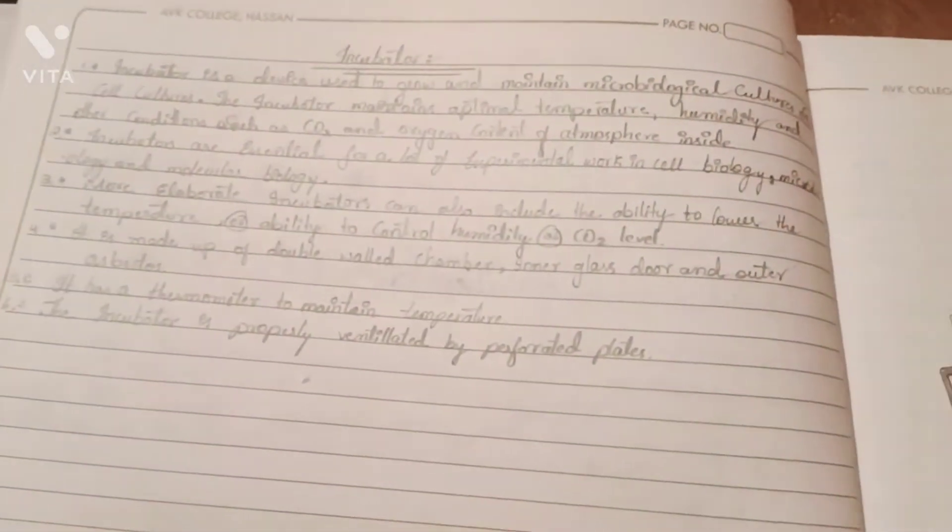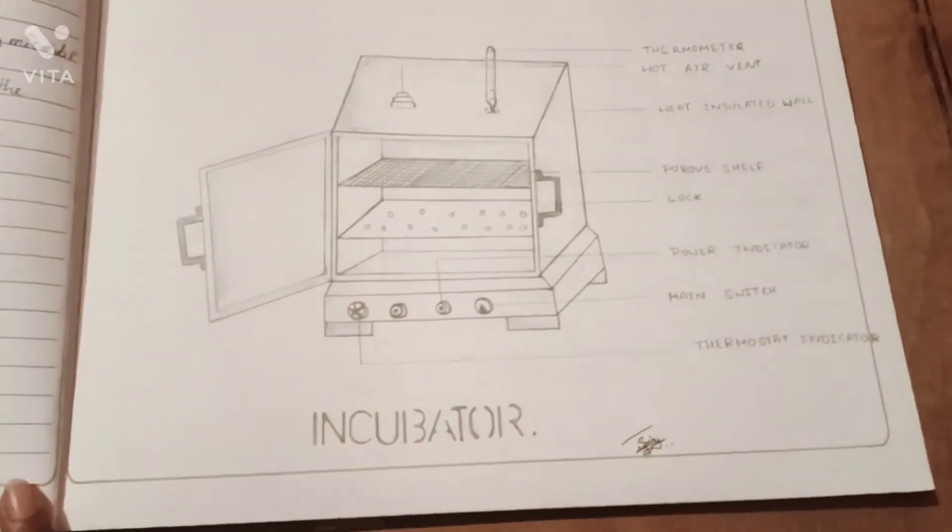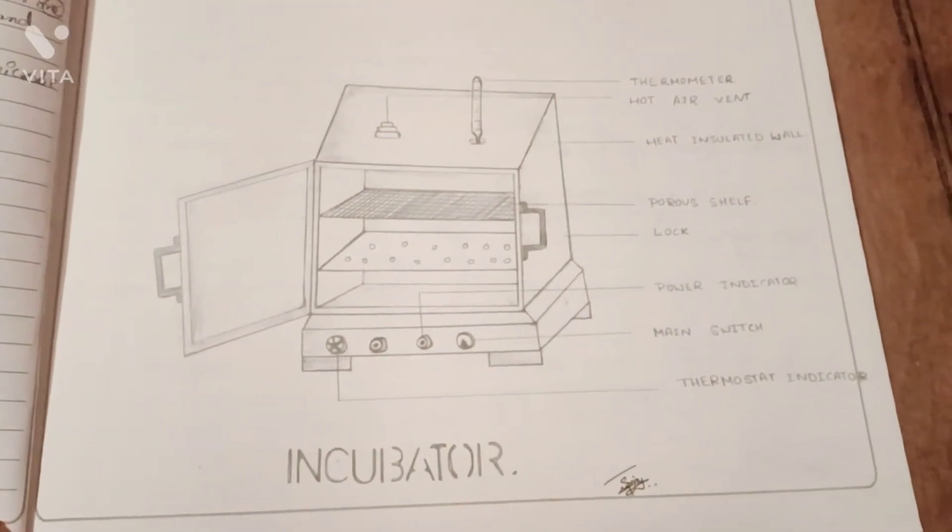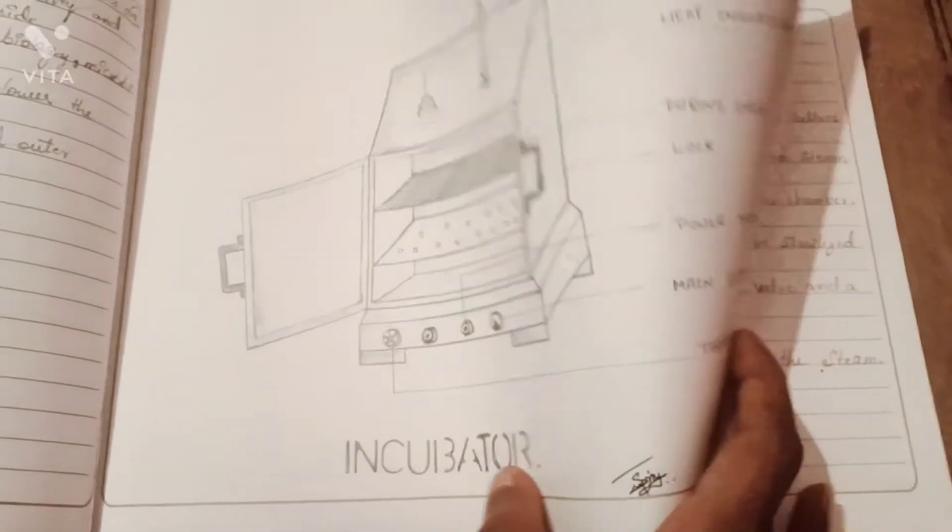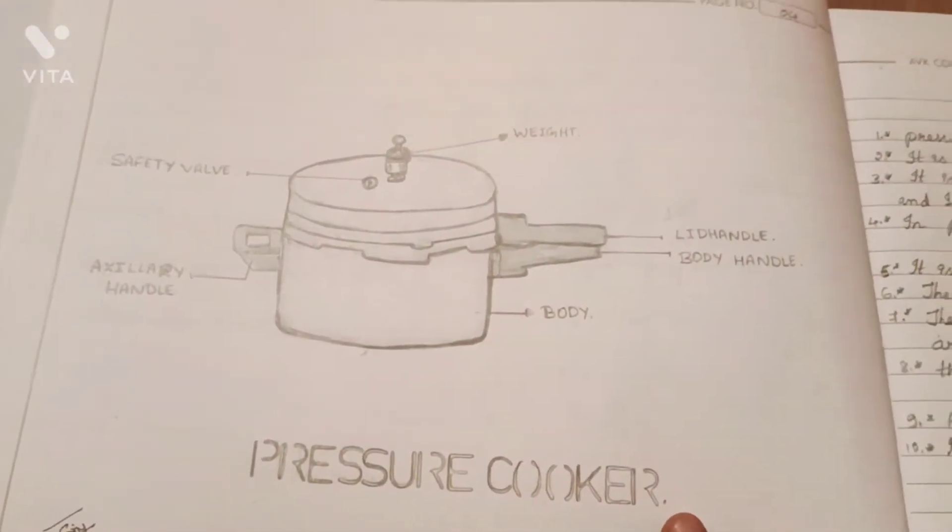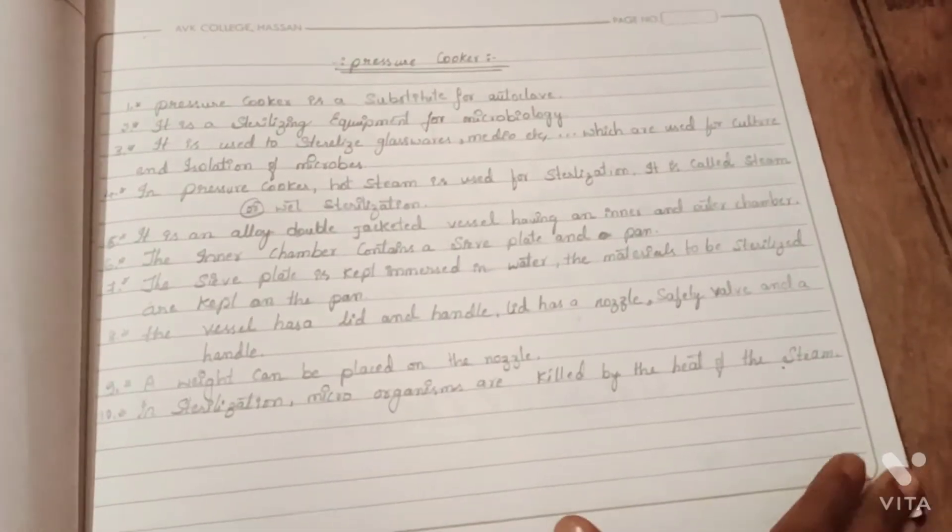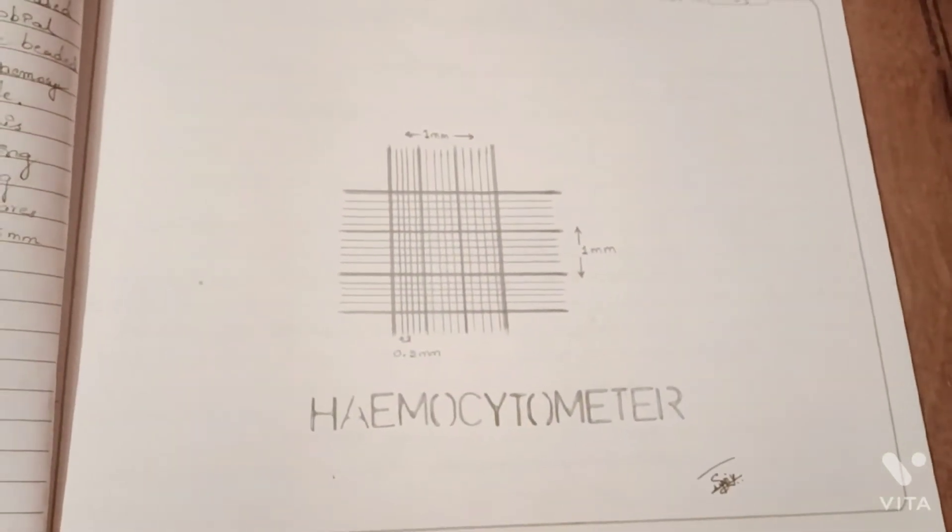And then this is an incubator. It looks the same as hot air oven but its function is different from that. Then came to the pressure cooker, and then hemocytometer.